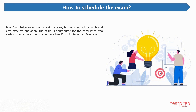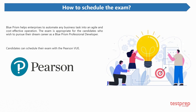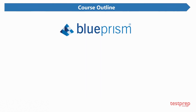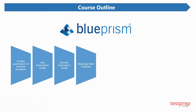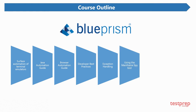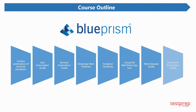Candidates can schedule their exam with Pearson VUE. The exam outline covers the following topics: surface automation of terminal emulators, Java automation guide, browser automation guide, developer best practices, exception handling, using the mainframe spy tool, work queues guide, and mainframe automation guide.